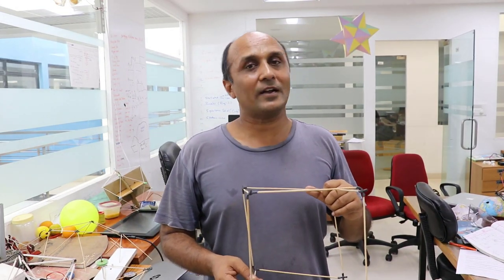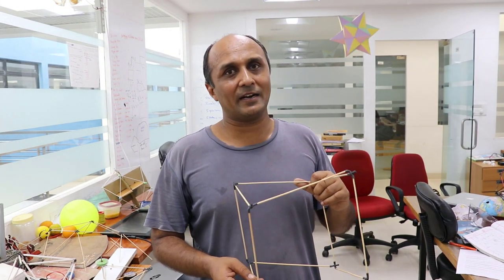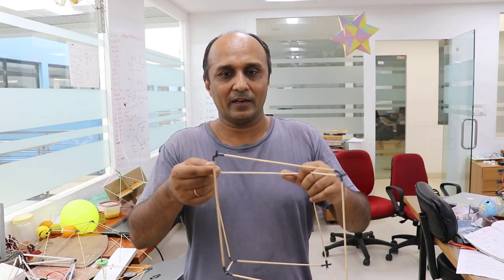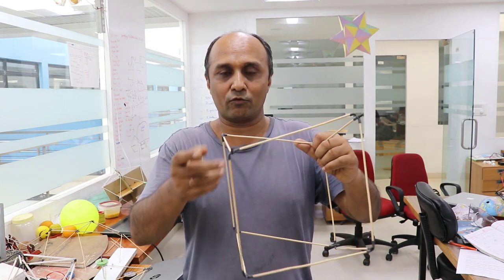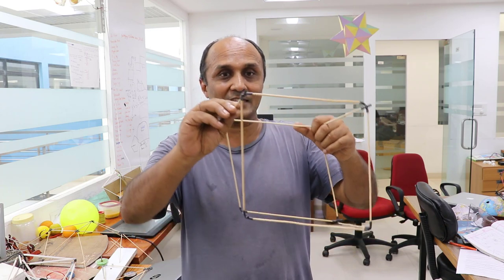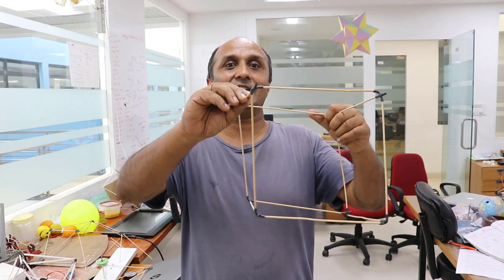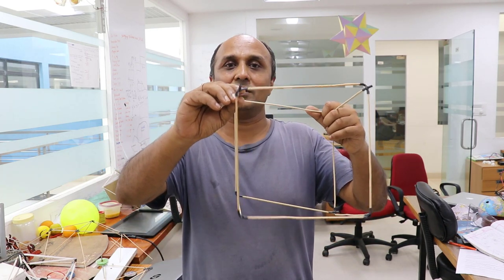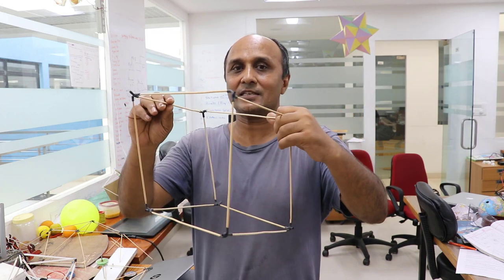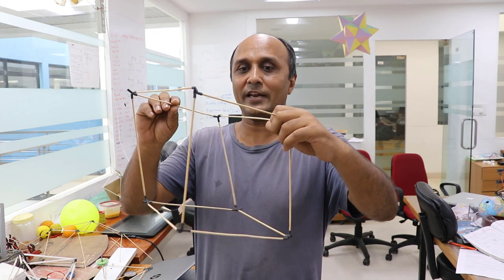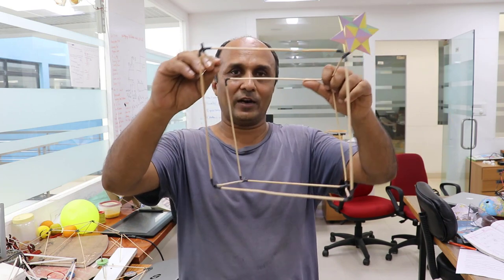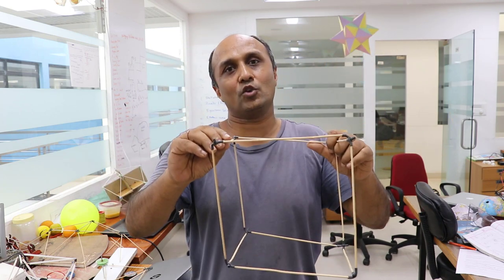We have seen the platonic solids made by triangles. Let's move to the next bigger polygon: the square. We need to join 3 squares at a point, and if we do this we get a cube — 1, 2 and 3 squares meeting at each point, with 8 points total. That's why this is called a cube.